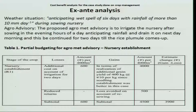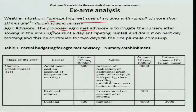Now let us try to examine the cost-benefit analysis. The weather situation is anticipating a wet spell of 6 days with rainfall of more than 10 mm per day, and the stage of the crop is nursery stage, one day after sowing. We are going to receive about 60 mm of rainfall. The agro advisory is to irrigate in the evening hours and drain the next day morning, continued for 2 days till the germinated seedlings get established.